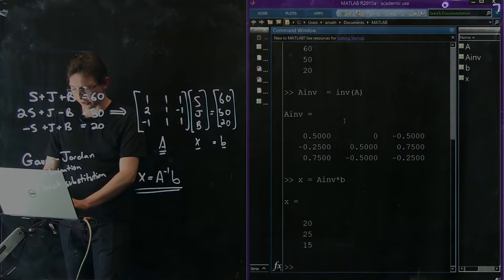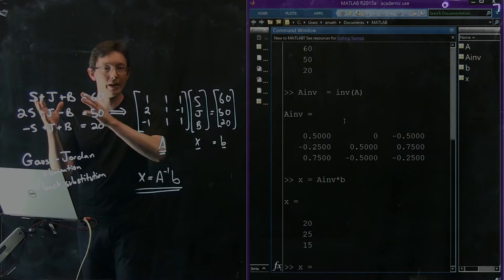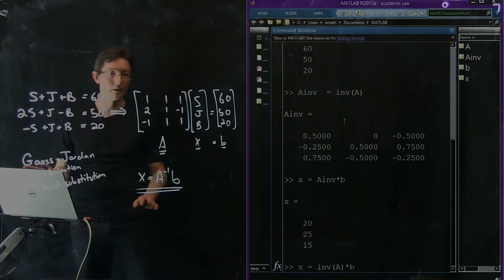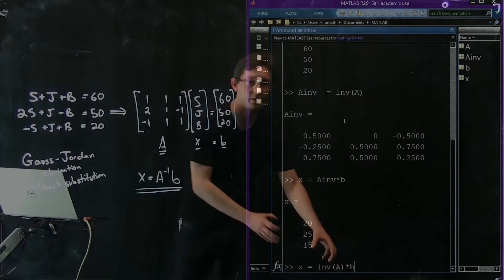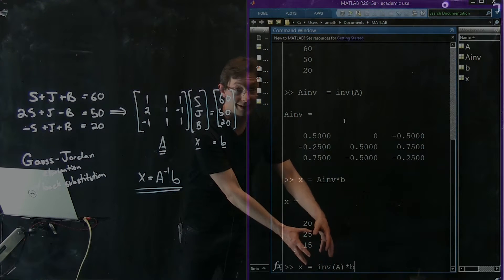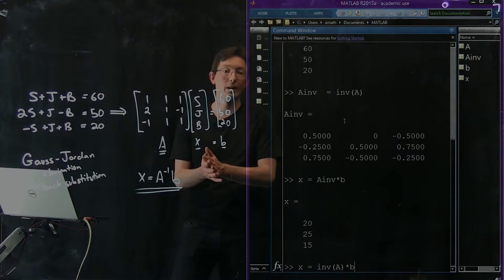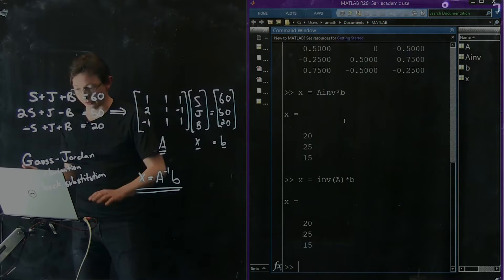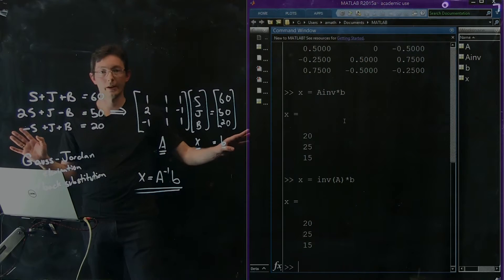I could equally well write x equals - I don't have to store the inverse of A into a matrix. I could just say INV of A times B. What MATLAB is going to do is solve for the inverse of A, then multiply it by B, and give me back x. This also gives me the correct answer.